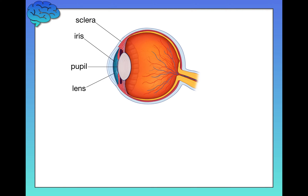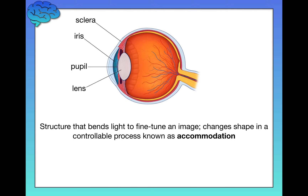Next, we have the lens. The lens is a structure that bends light to fine-tune an image — one of two main structures with this functionality. We have control over the curvature of our lens, and this control is called accommodation. If you've tried to squint to see something far away, or opened your eyes wide for something very close to your face, you're specifically trying to change the curvature of your lens to fine-tune the image based on its distance. That's accommodation.